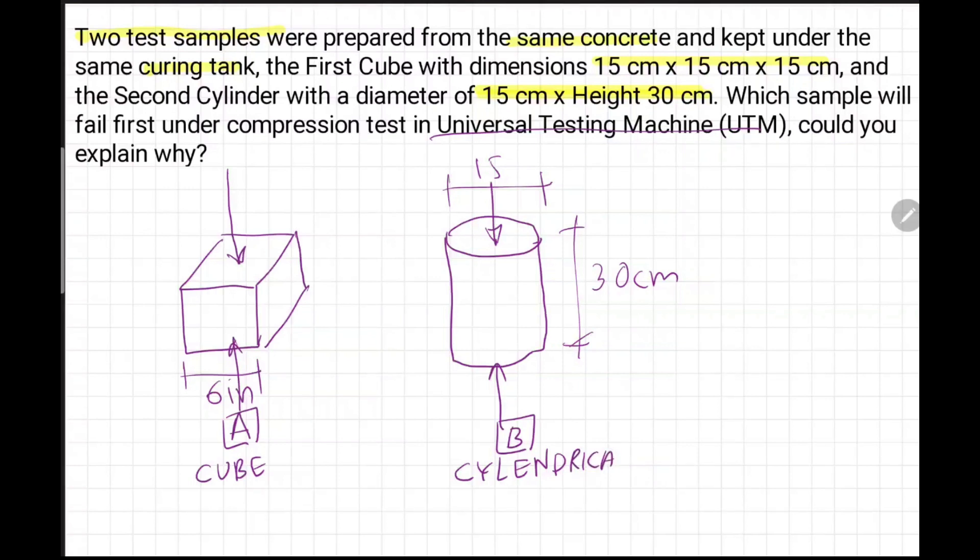Which sample will fail first under compression test? Sample A or sample B? Here we have a cube strength sample and second is cylindrical. Under compression test we know for a compression member design, the most important thing is slenderness ratio. Slender members - they fail first.